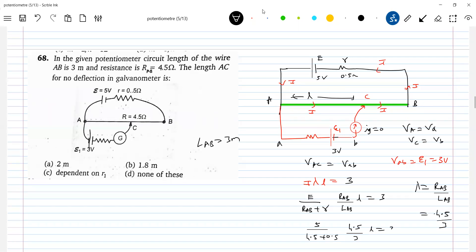RAB equal to 9 by 4.5. So length will be 2 meters.